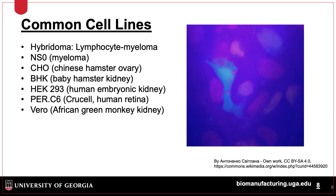Other notable lines include NS0 cells, which are used to generate monoclonals. Other cell lines include CHO cells, which we discussed and is shown in the image, as well as HEK cell lines, which along with BHK and PERC6 cells are used for recombinant protein production. Finally, Vero cells are used in virus production for vaccines.